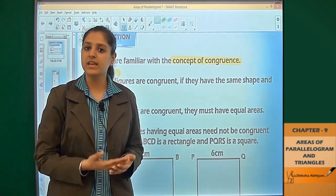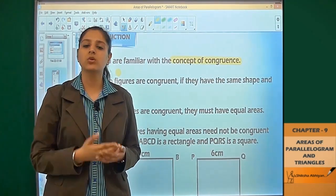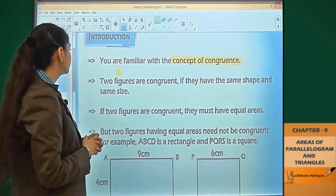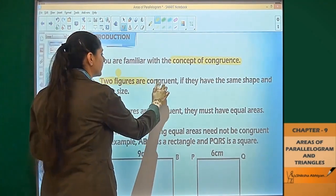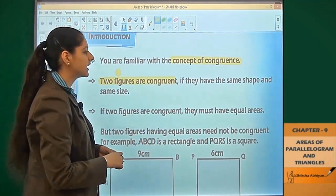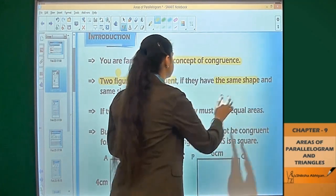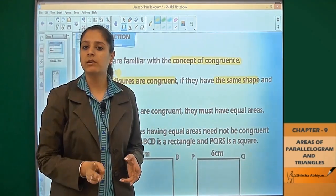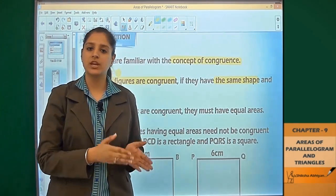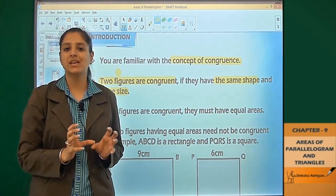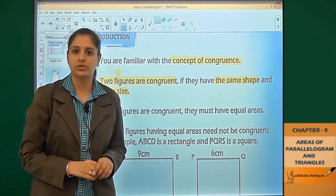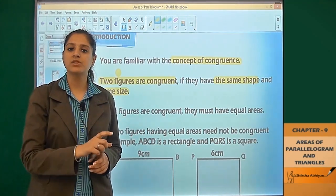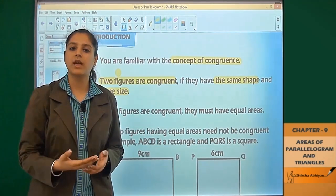We can say two figures are congruent if they have the same shape and same size. This is the basic criteria which must be fulfilled - same shape and same size, so obviously same dimensions and measurements.